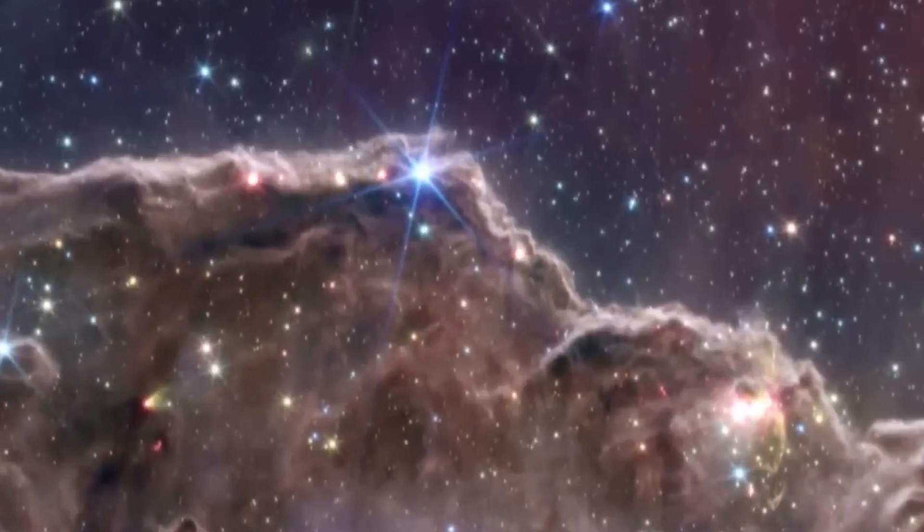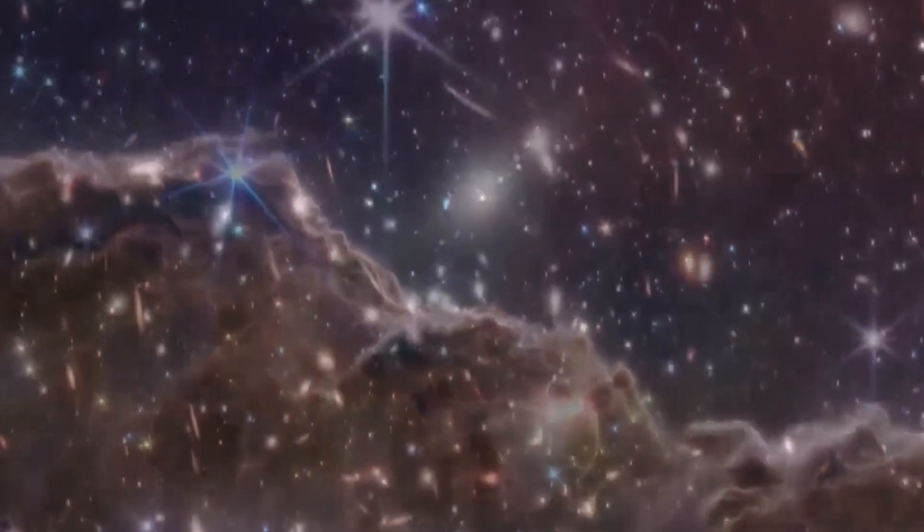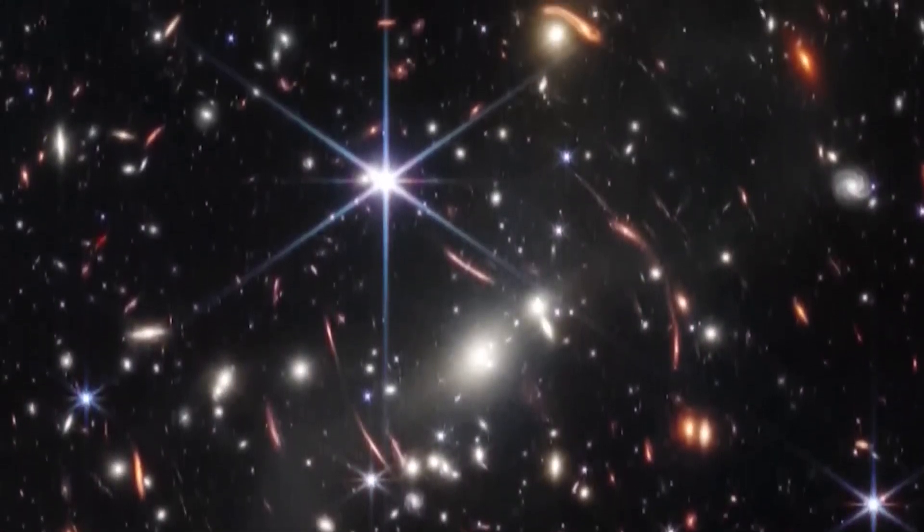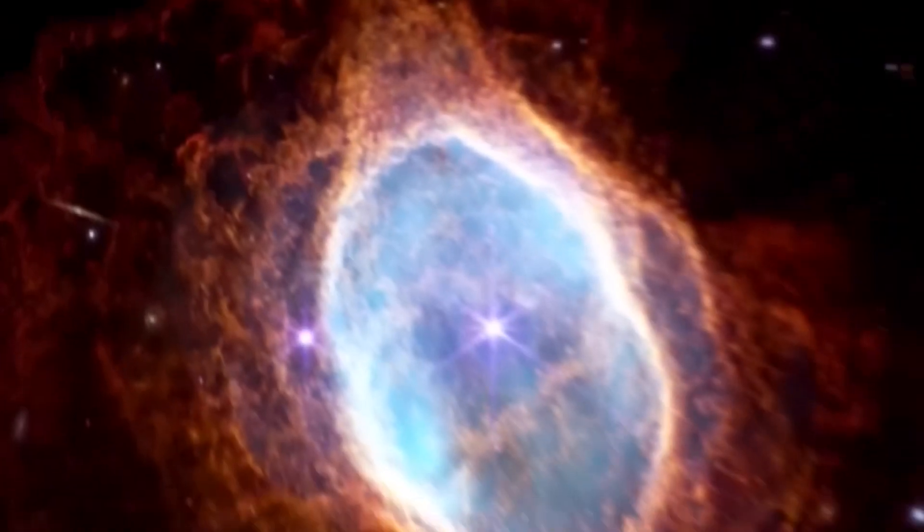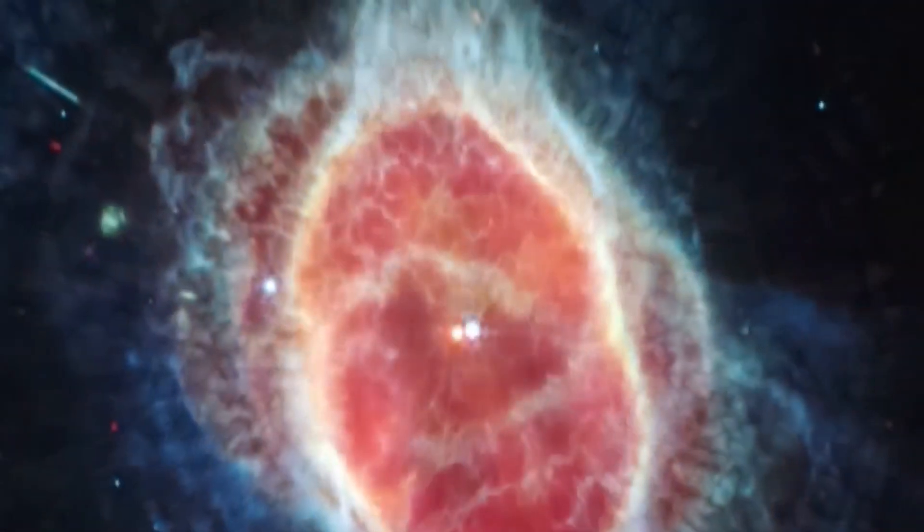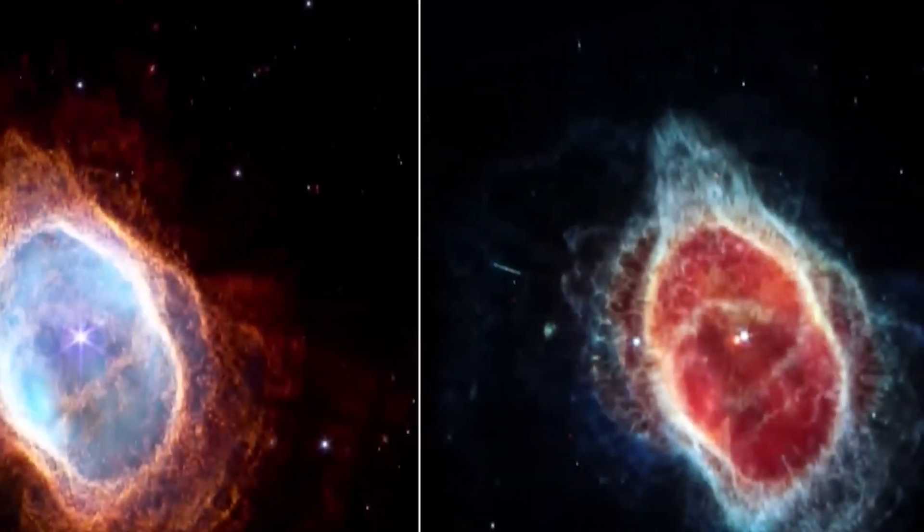Thousands of galaxies, including the faintest objects ever observed in the infrared, have appeared in Webb's view for the first time, all captured in a relatively small area. The slice of the vast universe covers a patch of sky approximately the size of a grain of sand held at arm's length by someone on the ground.